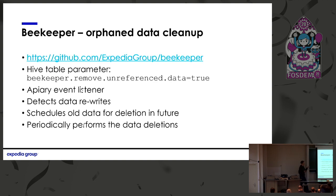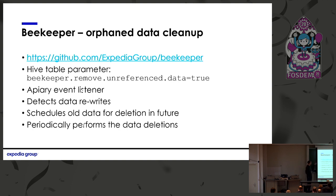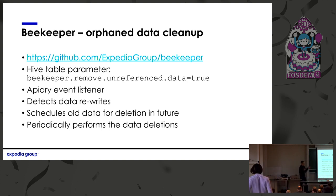So we wrote a tool called Beekeeper. It sits downstream of the metadata event framework, watches for changes, and detects when an update operation has potentially orphaned data. The data owner just puts a Hive table parameter on their table, and Beekeeper plugged onto the event listener finds the rewrites and schedules the data for deletion in the future. We have a time window of three days just to be completely sure all users have stopped reading that data before deletion happens. This is one of the places where having a central platform makes it much easier for end users, as they don't have to do all these housekeeping operations themselves.